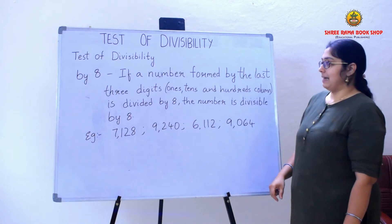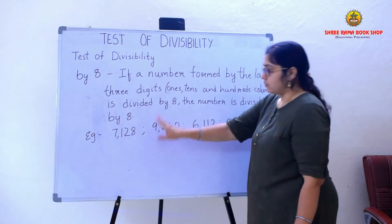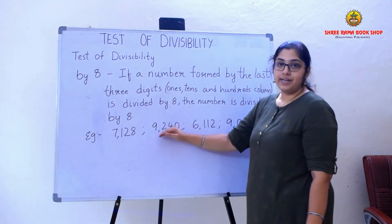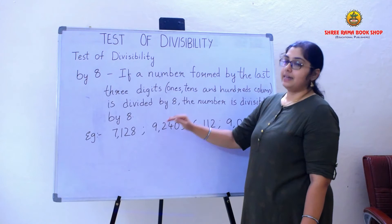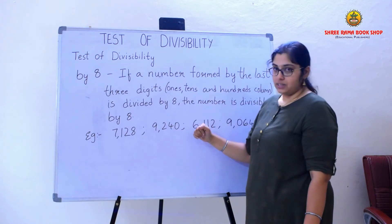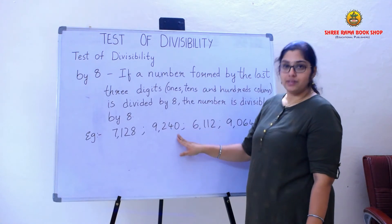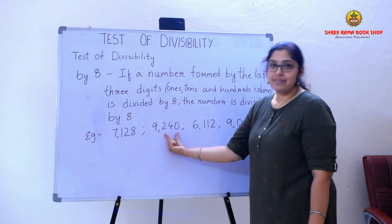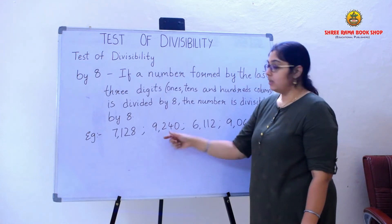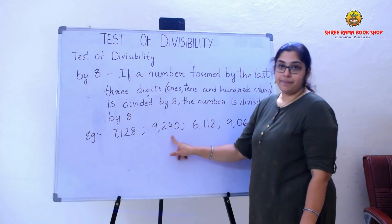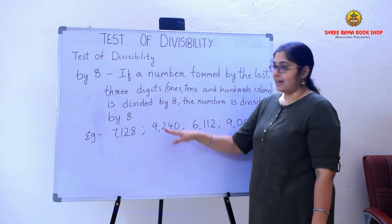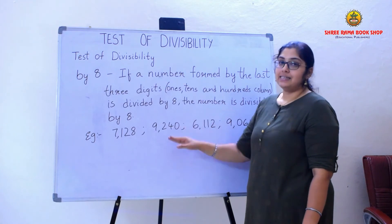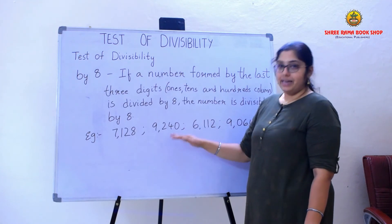Moving on to the next example, it is 9,240. In the last three digits column — that is the 100's, 10's, and 1's column — I have 240. As 240 is divided by 8, I can say that this whole number 9,240 is also divisible by 8.